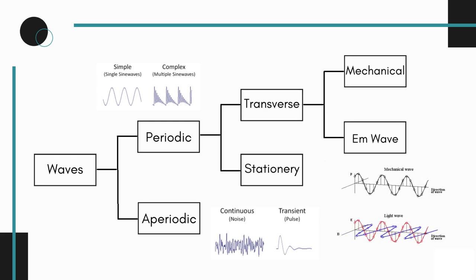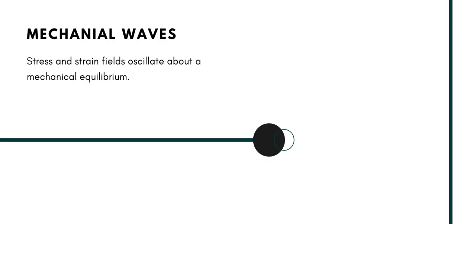The most commonly studied are mechanical waves and electromagnetic waves. In a mechanical wave, stress and strain fields oscillate about a mechanical equilibrium. They are of two types.